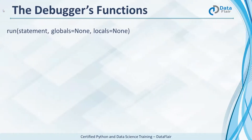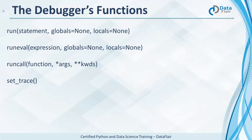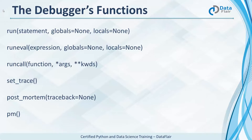Now, some functions with the debugger. Run executes the statement under the debugger's control. Runeval evaluates it. Runcall calls it with the specified arguments. Set_trace lets us enter the debugger at the calling stack frame. Postmortem allows for postmortem debugging of the specified traceback object. And pm enters the postmortem debugging of the traceback in sys.last_traceback.